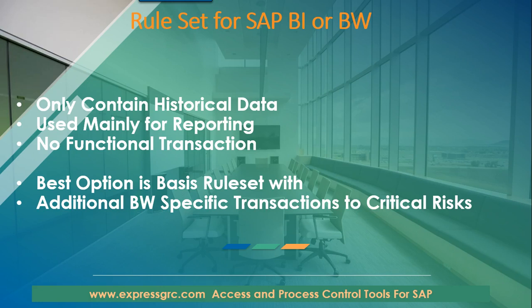BW contains historical data, which basically means data which is not current — data which is weeks old, months old, or a year old. That data is brought in from ECC and other systems, both SAP and non-SAP systems, and it is consolidated into reporting.